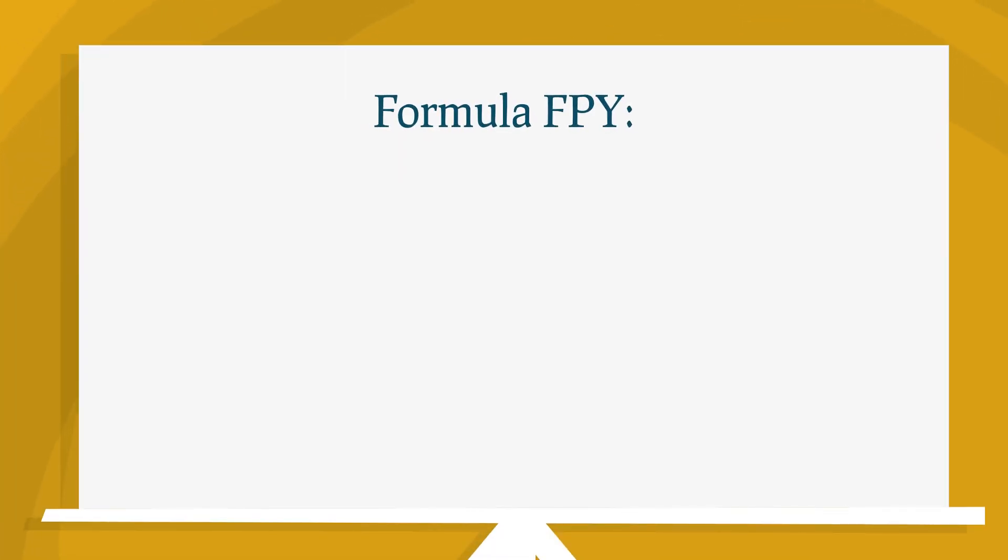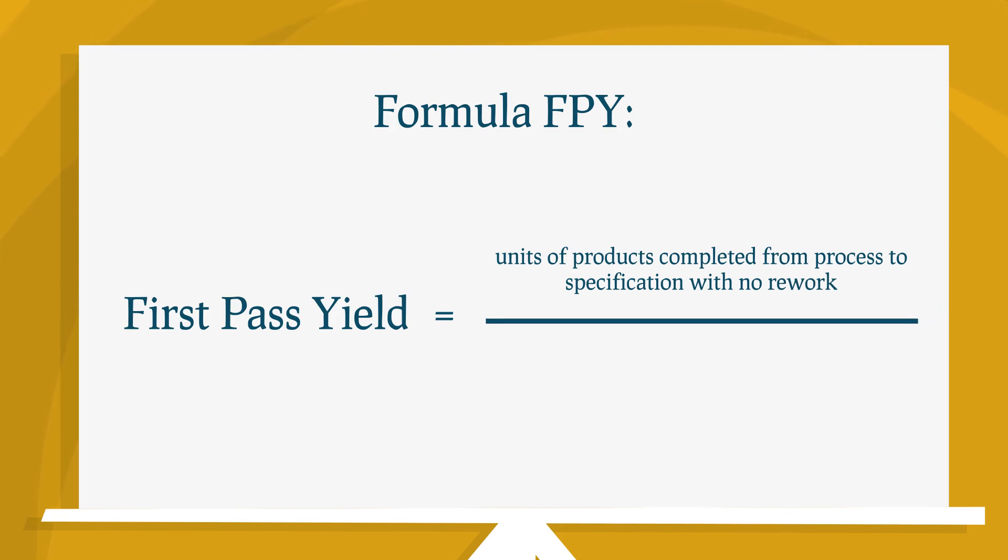Formula for First Pass Yield: First Pass Yield equals units of products completed from process to specification with no rework, divided by total units of products entering the process.